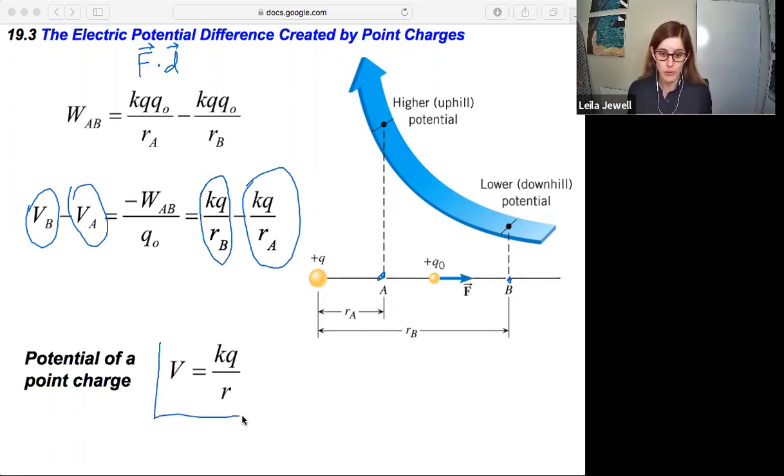The electric potential of a point charge V can be calculated with K times the amount of charge divided by the distance from the charge to whatever point of interest we have. Now, one thing to note here is this Q is not an absolute value, so the sign does matter here if it's positive or negative. And that will change if you're going to have a positive or a negative potential. So positive charges, as shown here, create a more positive potential and negative charge creates a negative potential going the opposite way.